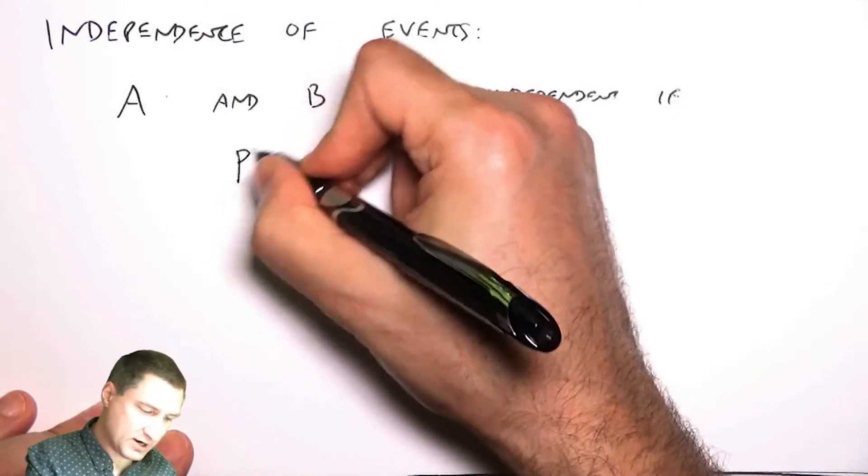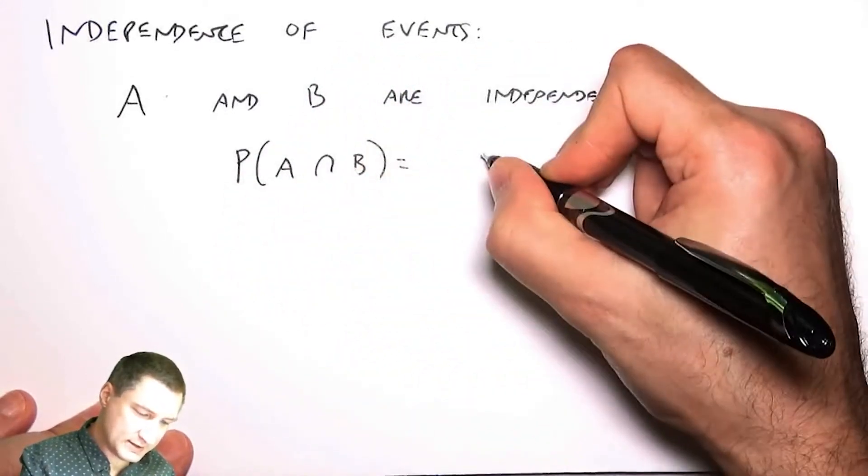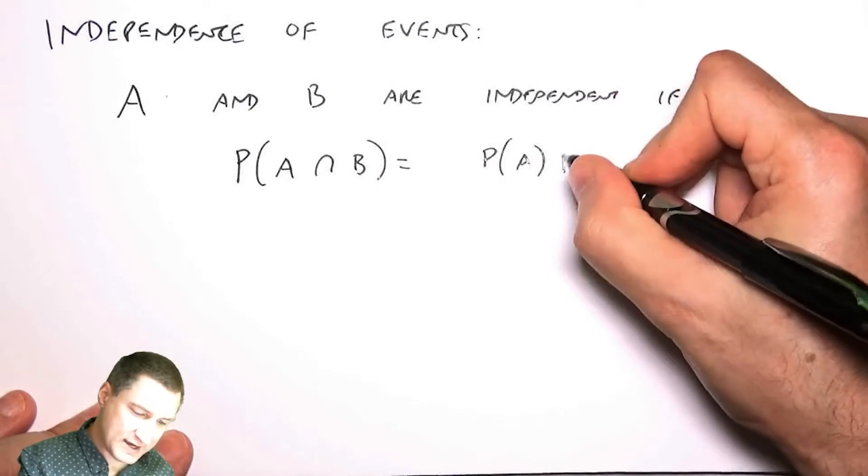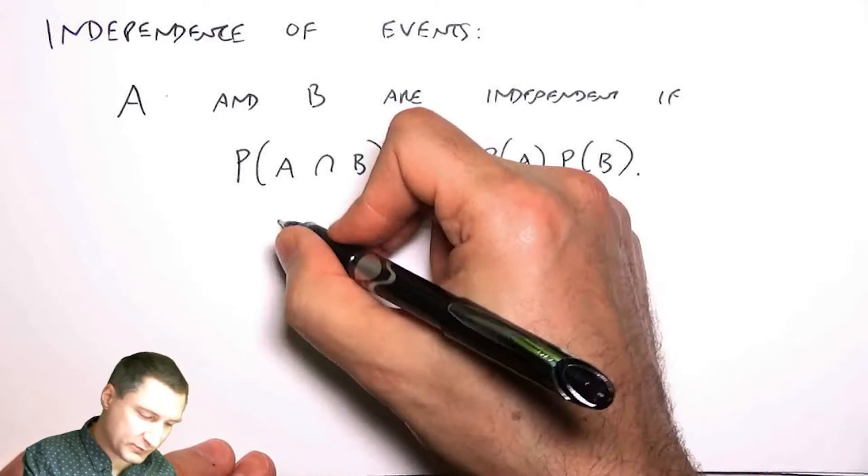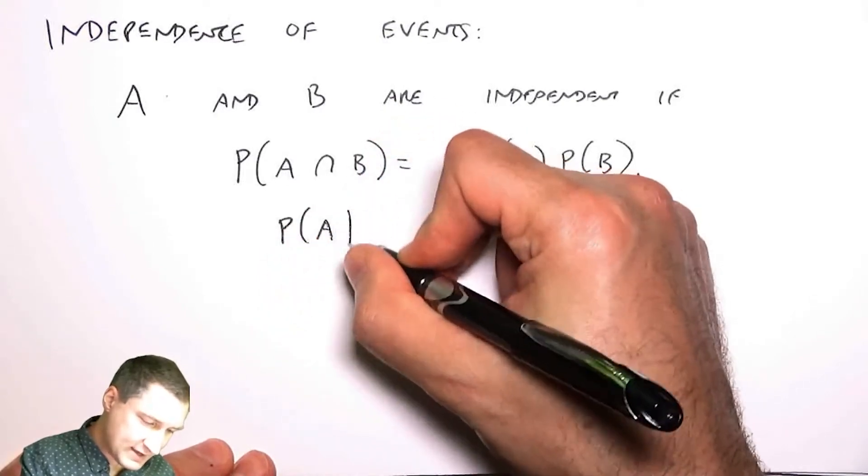if the probability of A and B is the same as the probability of A times the probability of B. That was our definition. And an equivalent way of thinking about this was that the probability of A given B was the same as probability of A.